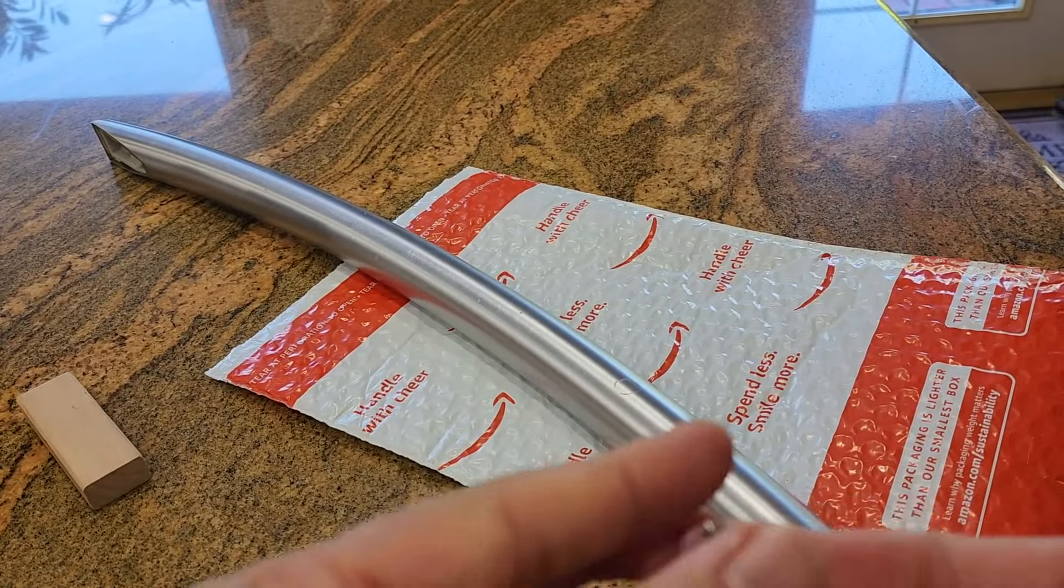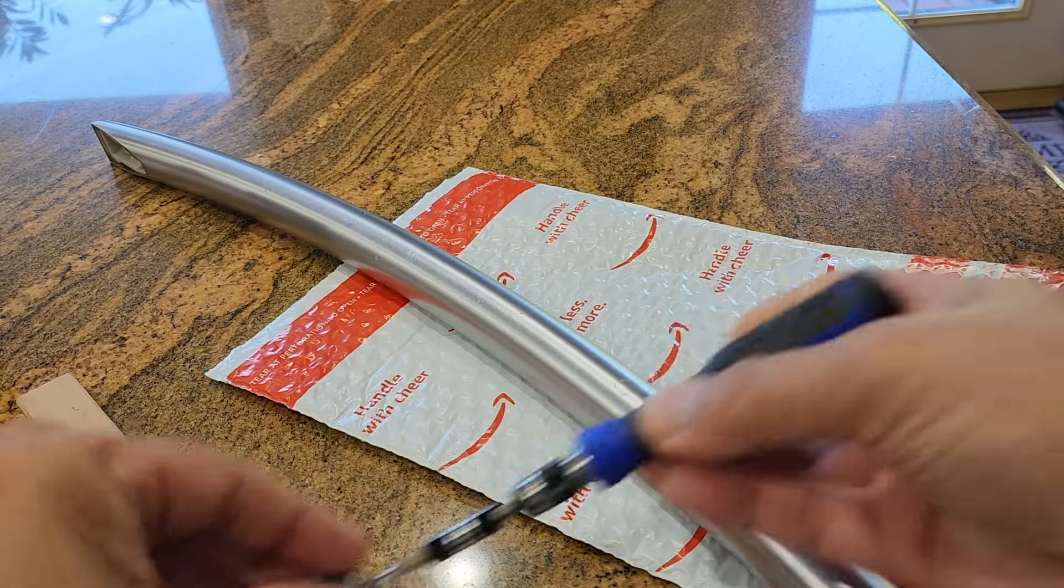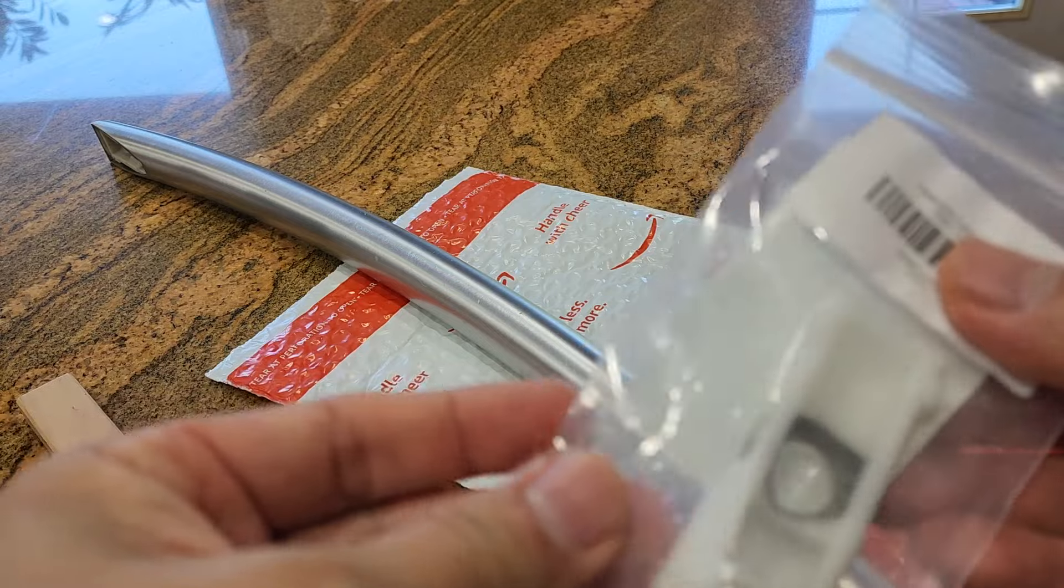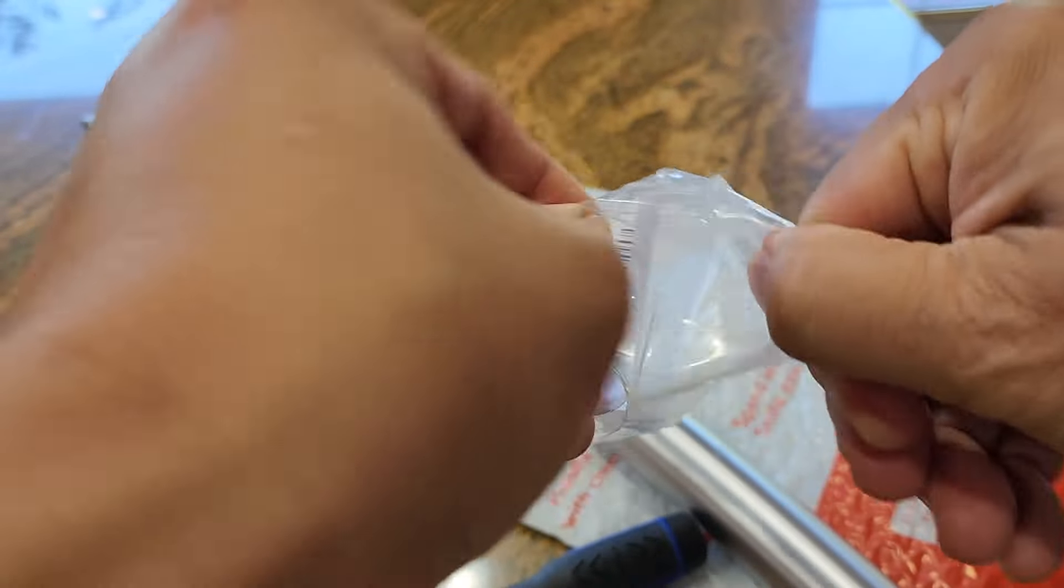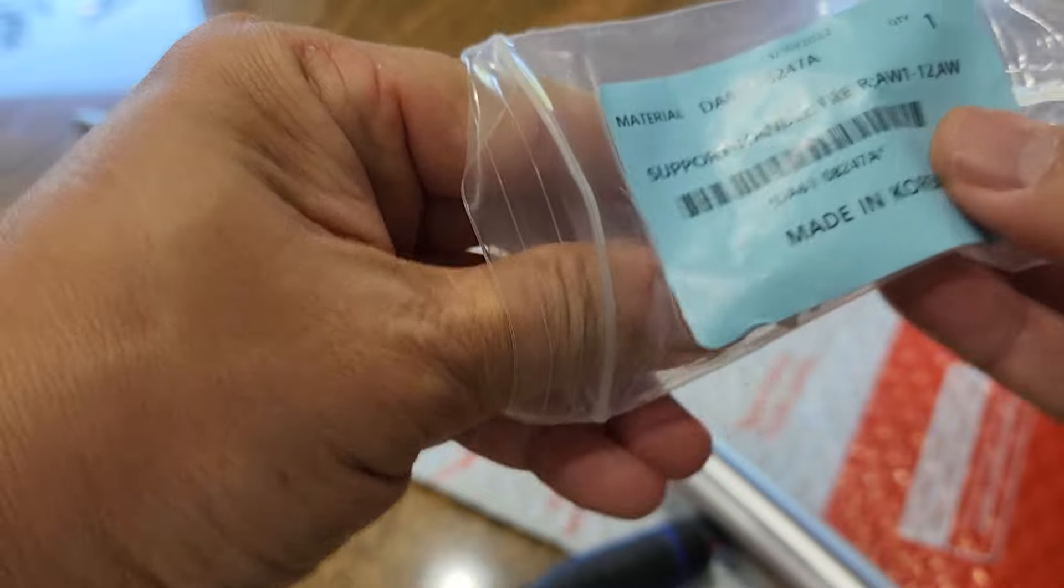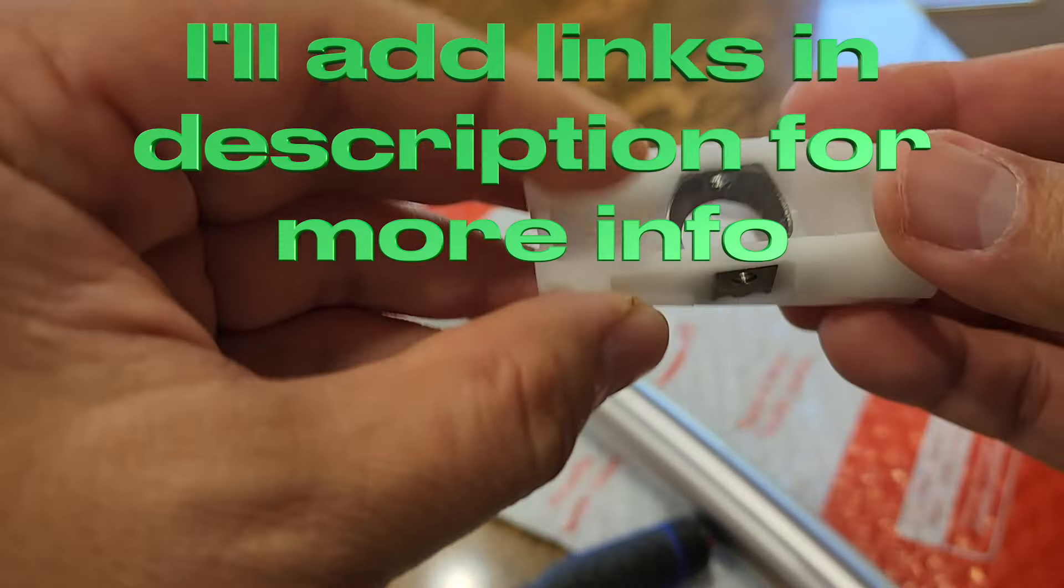Anyway, so we're going to salvage the set screw here, because, let me show you the part here. So this is the replacement part from Amazon, and it doesn't have all the pieces. This is the actual plastic support handle. So there's the part number. It's made in Korea.